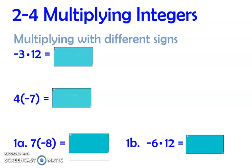Hi everybody, this is Mrs. Ellsworth. We're going to be talking about multiplying integers, and I want you to take notes on this. Mark up at the top: 2-4 Multiplying Integers, and you're going to be writing down several examples so that you can go back and check your notes.